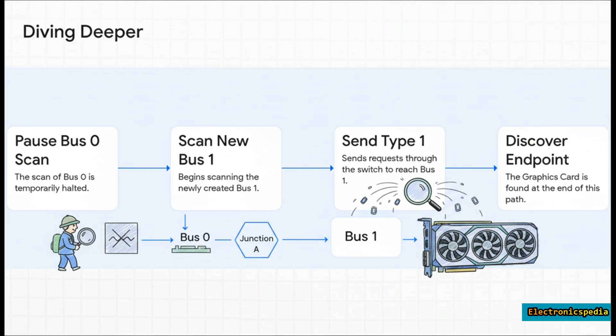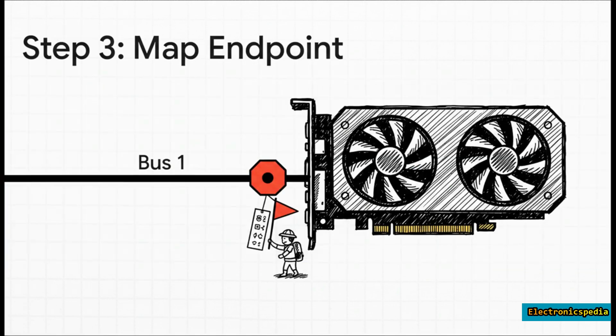It starts scanning the brand new Bus 1. And to do that, it sends those Type 1 requests through the switch, telling it to pass the scan along. And that's how it discovers the graphics card. The graphics card is what we call an endpoint. It's a final destination. It's not another bridge leading somewhere else.